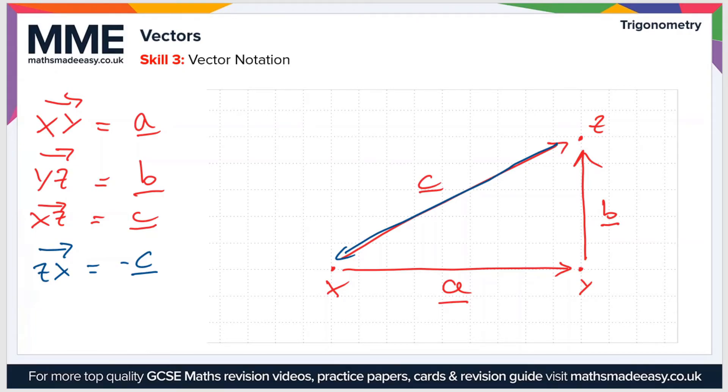We can also combine vectors. Let's say we're going from point X to point Y. We can express that like so, XY. That is obviously equal to A. But we can also go the long way around. If we went from X to Z, which is the same as C, and then we went from Z to Y, which is the same as minus B, then we can say that XY equals C minus B. That is obviously equal to A, because XY is equal to A. Remember to underline your vectors.